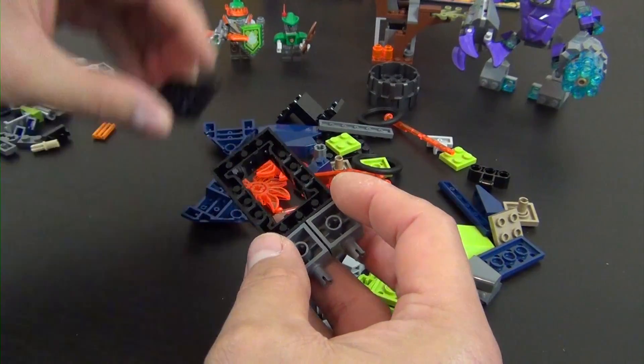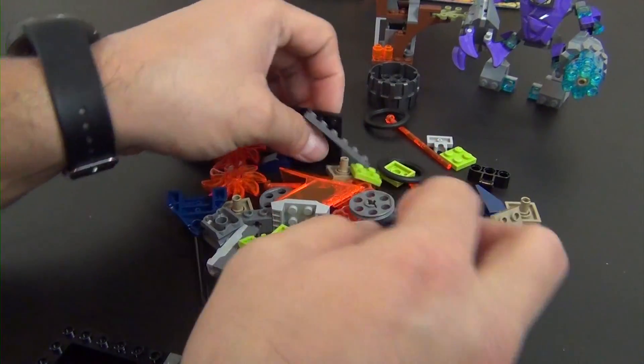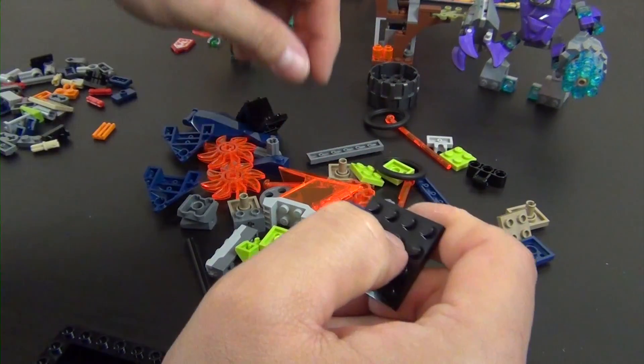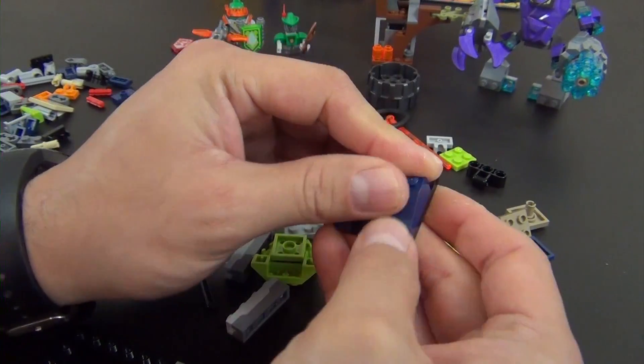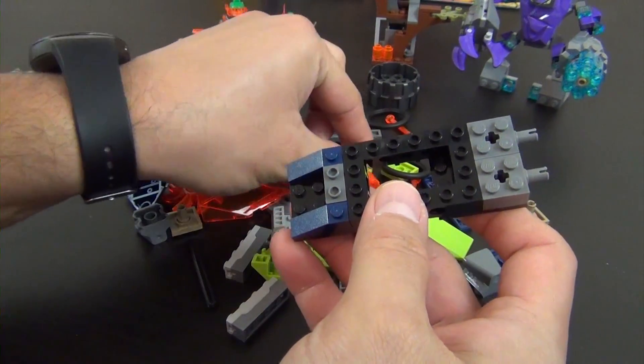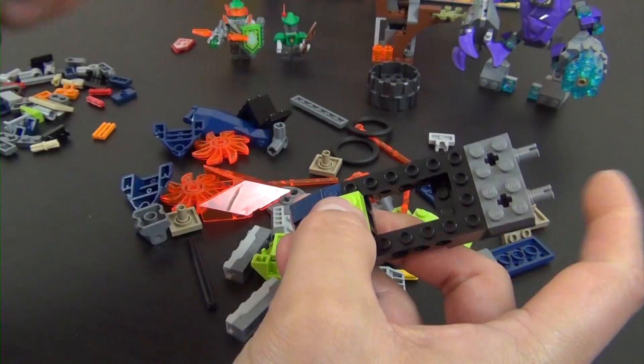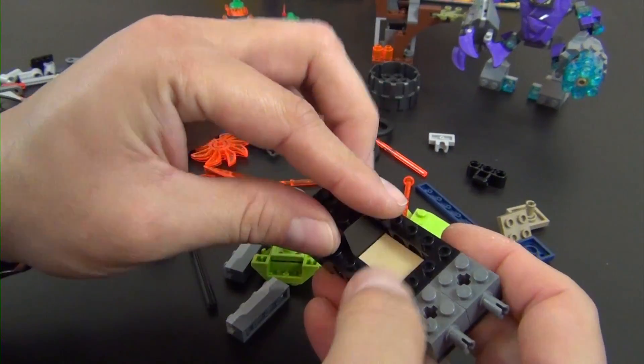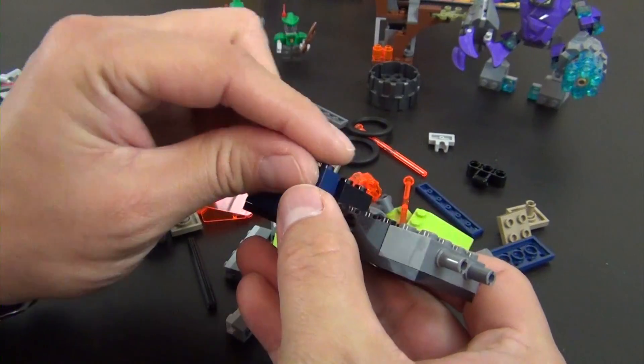Okay, turn this over. 4x4 plate on there. Another 4x4 plate with a dark blue slope, a technic brick. Another dark slope. I don't know why I keep dropping stuff. Two more plates. This angled plate with a two by three tile on it. That will go just like that. Two more slopes.